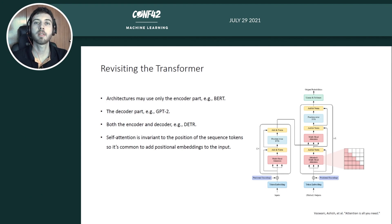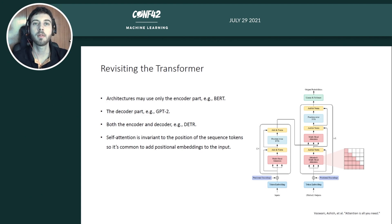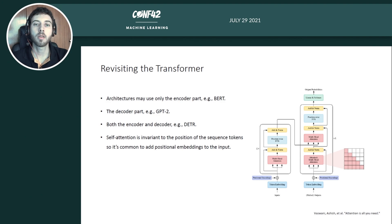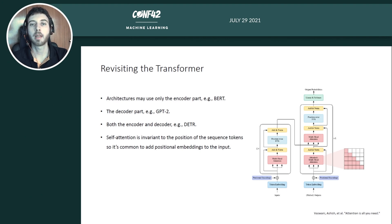Revisiting the transformer: in the original architecture we had an encoder and decoder, but we can also use only part of it. Architectures using only the encoder, like BERT, are important when we want a global representation of the sequence for tasks like sentiment analysis. Architectures using only the decoder are used for language modeling like GPT-2. Architectures using both encoder and decoder, like the detection transformer, will be seen next. It is also important that self-attention is invariant to the position of tokens, so it's common to add positional encodings to the input so the model can reason about positions.